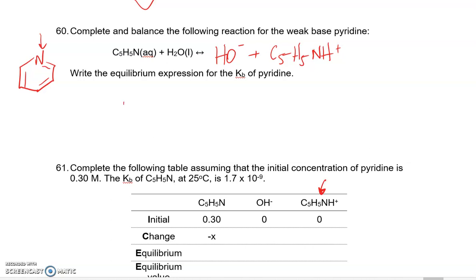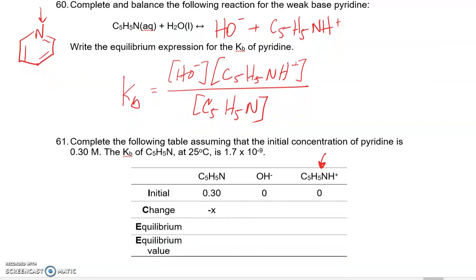So to write an expression for Kb, this is going to be the exact same as always. We're going to do concentration of our hydroxide times concentration of our conjugate acid now, C5H5NH+, divided by our original base, our pyridine. And that right there is going to be our equilibrium expression, our Kb.